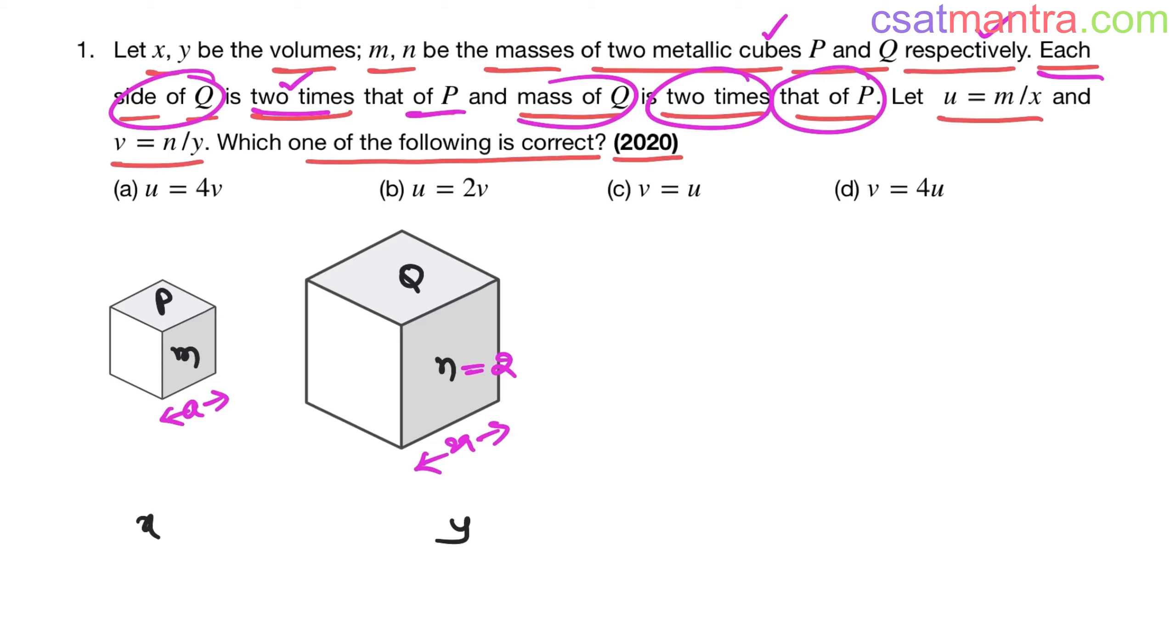Now tell me, what is x? Side cubed. x = a³. What is y? Side cubed, that is equal to (2a)³ = 8a³. Let's substitute these values in the asked expressions. u is equal to m by x, which is m/a³.